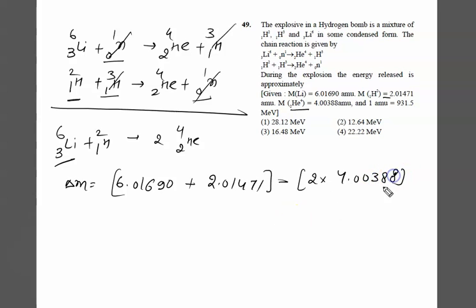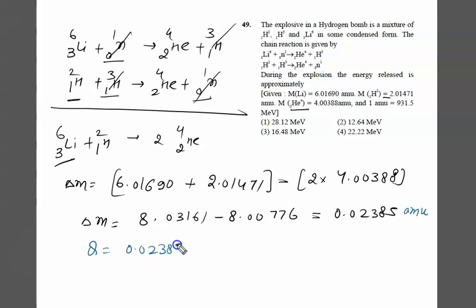We calculate in amu. The total mass defect Δm, we can calculate by the calculator, the value is 0.02385 atomic mass units. And one atomic mass unit is 931.5 MeV energy. So the net Q value is given by Δm, that is 0.02385 × 931.5 MeV. When you install with the calculator, you will get 22.216 MeV.